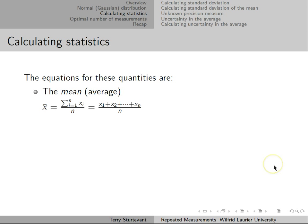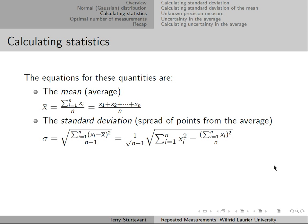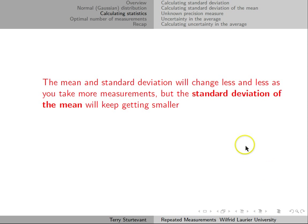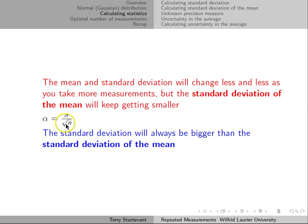We have equations for the average and the standard deviation. This form of the standard deviation makes it easier to calculate as you add measurements. The standard deviation of the mean is calculated by taking the standard deviation and dividing it by the square root of the number of measurements. As you take more measurements, the mean and standard deviation change less and less, but the standard deviation of the mean always gets smaller. Alpha will always be smaller than sigma, because alpha equals sigma divided by the square root of some number greater than 1.